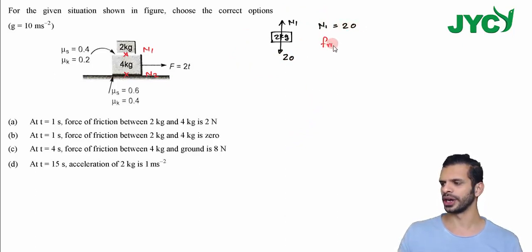Now we have maximum static friction fmax between 2 kg and 4 kg. Let's say fmax1 is equal to 0.4 into 20, which is mu_s into n, which is 8 newton. Whereas f kinetic between 2 and 4 is going to be 0.2 into 20 which is 4 newton.